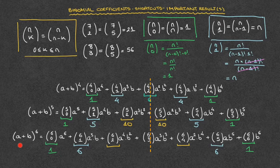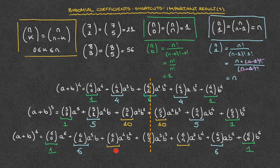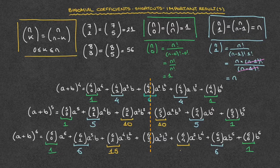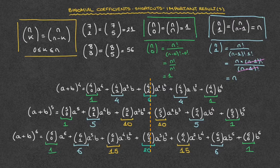For the expansion of (a+b)^6, we need to calculate the middle coefficient 6 choose 3, plus one of the mirror pair. Since 6 choose 2 and 6 choose 4 are mirror images, we only calculate one: 6 choose 2 equals 15, so 6 choose 4 is also 15. Finally, the middle coefficient 6 choose 3 equals 20. And there we have it — these results provide some great shortcuts for calculating binomial coefficients in binomial expansions.